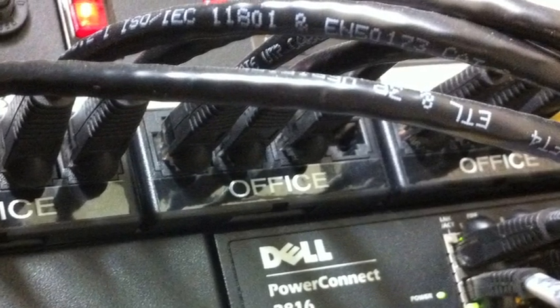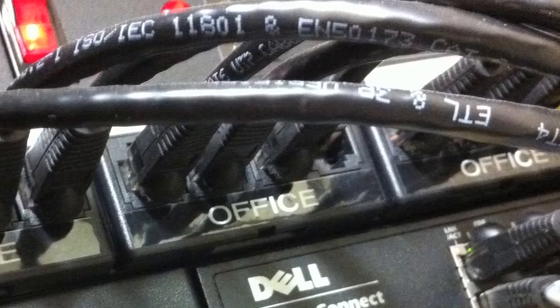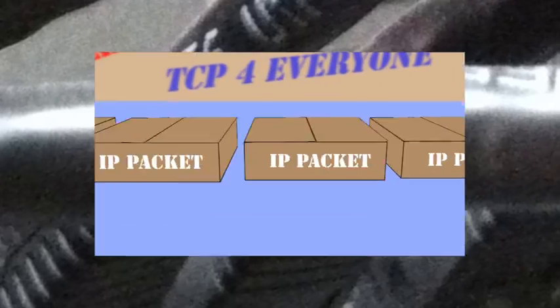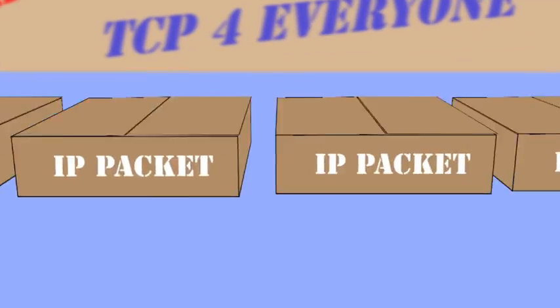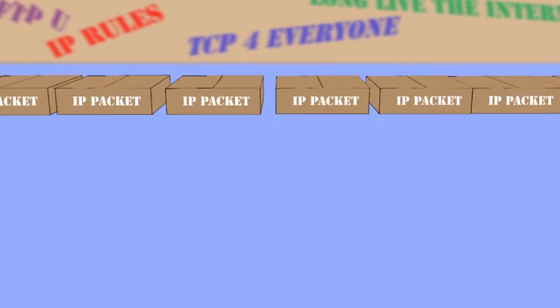If we look inside one of these data cables, we would see the actual packets in the forms of ones and zeros traveling along the wire, just like this. And if we were to stop one of these IP packets and look inside it, we would find the components that make up the packet.